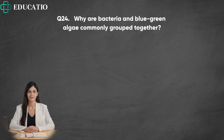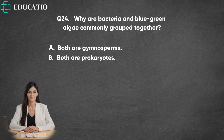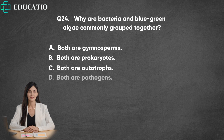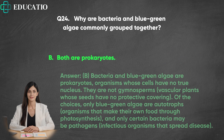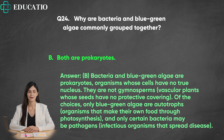Question 24. Why are bacteria and blue-green algae commonly grouped together? A. Both are gymnosperms. B. Both are prokaryotes. C. Both are autotrophs. D. Both are pathogens. Answer: B. Bacteria and blue-green algae are prokaryotes, organisms whose cells have no true nucleus. They are not gymnosperms, vascular plants whose seeds have no protective covering. Of the choices, only blue-green algae are autotrophs, organisms that make their own food through photosynthesis, and only certain bacteria may be pathogens, infectious organisms that spread disease.